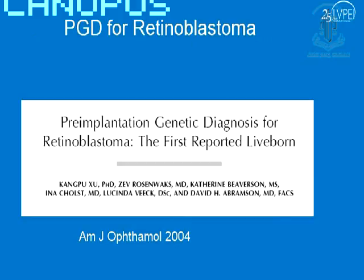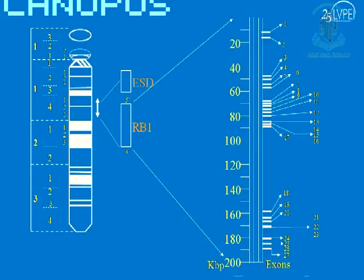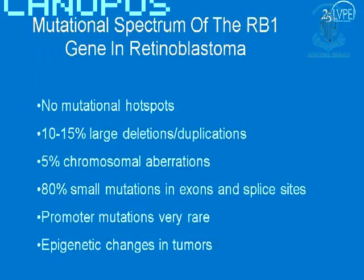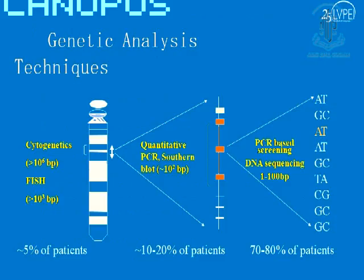Pre-implantation genetic diagnosis has been done for retinoblastoma, published in the American Journal of Ophthalmology. This shows the organization of the RB1 gene, with an SPHD marker located right next to it, used in earlier days before the gene was known. There are all kinds of mutations in RB1, ranging from very large deletions encompassing almost the whole gene, to small mutations affecting single bases, to epigenetic mutations. Different techniques are required depending on the type of mutation, so a complete genetic test for RB would cover multiple methods.